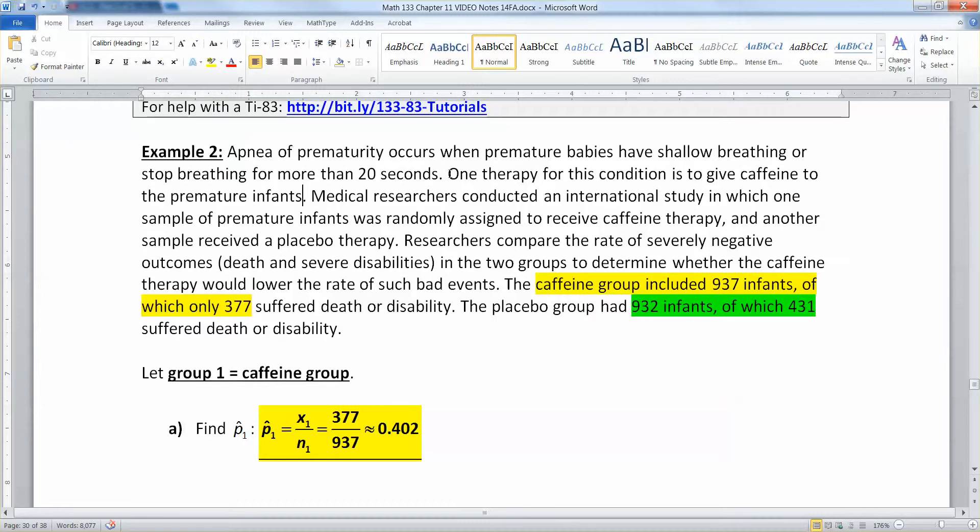Medical researchers conducted an international study in which one sample of premature infants was randomly assigned to receive caffeine therapy and another sample received a placebo therapy. Researchers compared the rate of severely negative outcomes, death and severe disabilities in the two groups to determine whether the caffeine therapy would lower the rates of such bad events. The caffeine group included 937 infants of which only 377 suffered from death or disability. The placebo group had 932 infants of which 431 suffered death or disability.